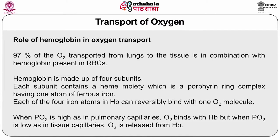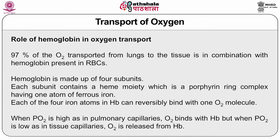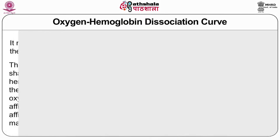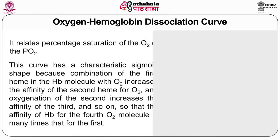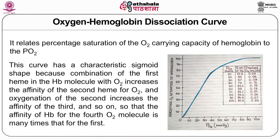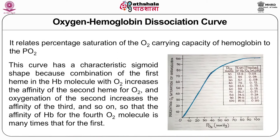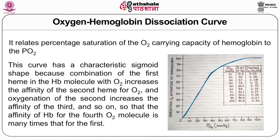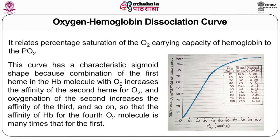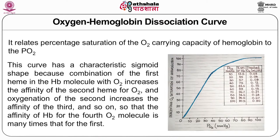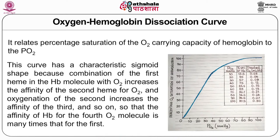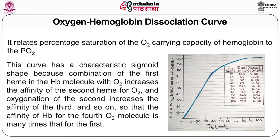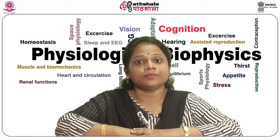When PO2 is high, oxygen binds to hemoglobin; when PO2 is low as in tissue capillaries, oxygen is released. The oxygen-hemoglobin dissociation curve relates percentage saturation of the oxygen-carrying capacity of hemoglobin to the partial pressure of oxygen. This curve has a characteristic sigmoid shape because the binding of oxygen to the first heme increases the affinity of the second heme for oxygen, oxygenation of the second increases affinity for the third, and so on — the affinity for the fourth oxygen molecule is many times greater than for the first.